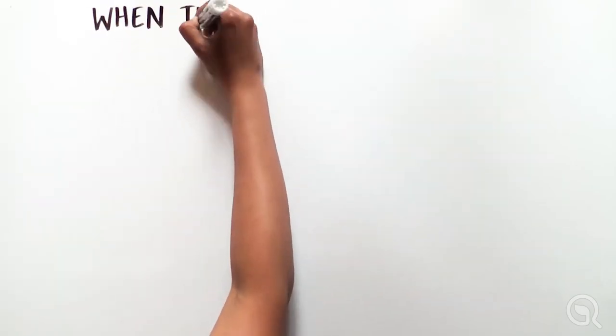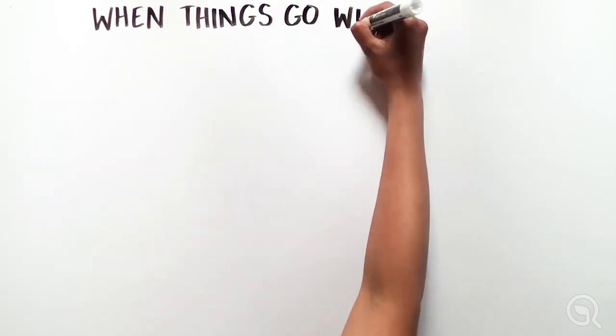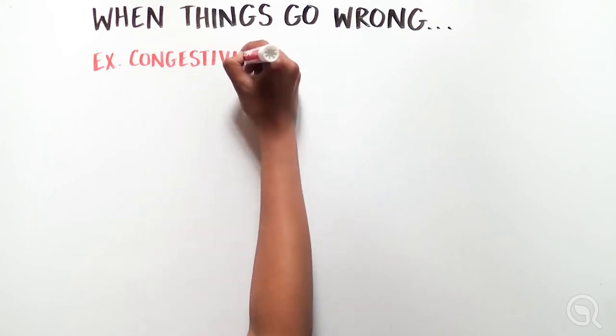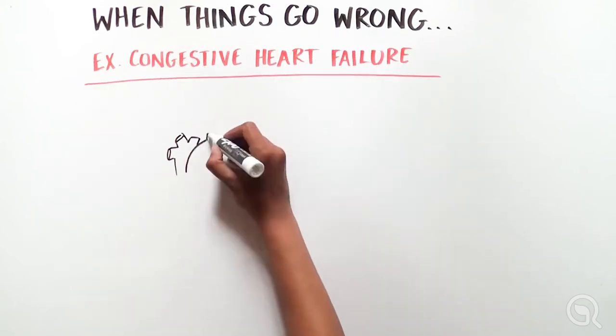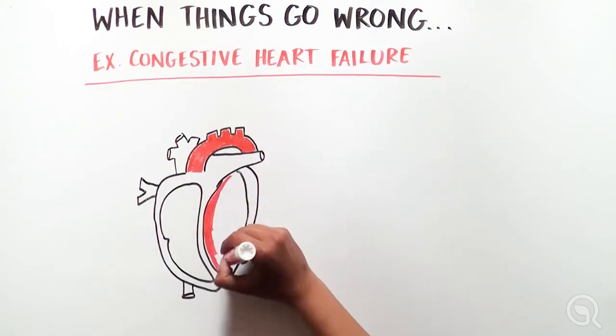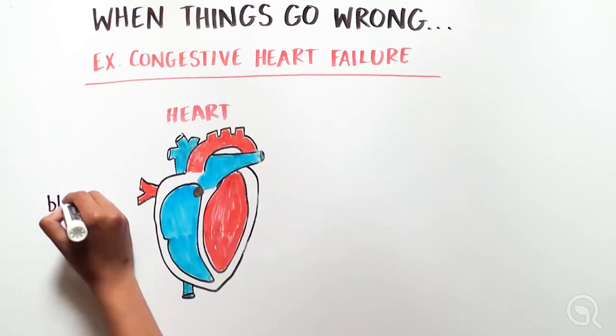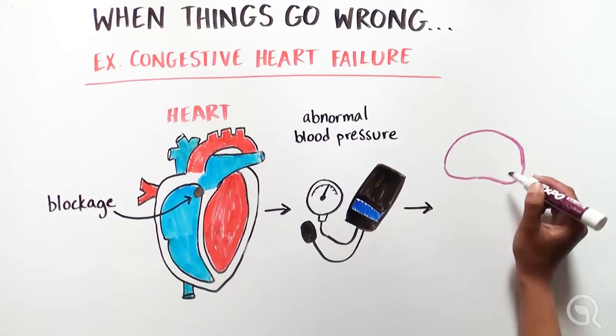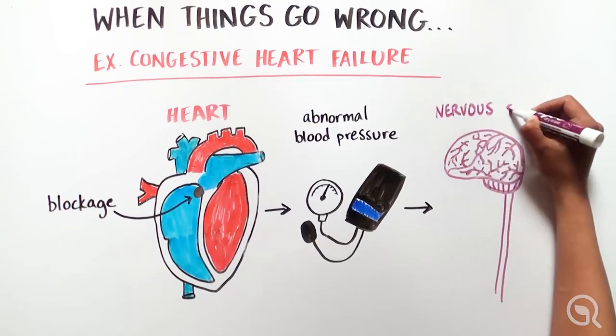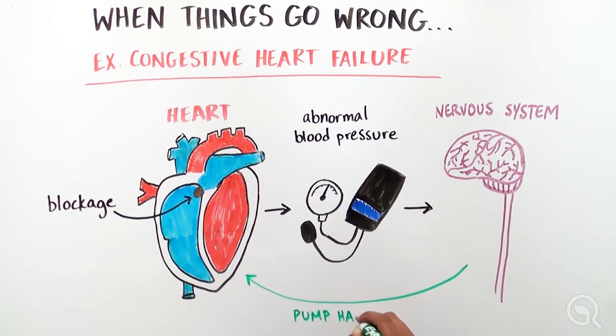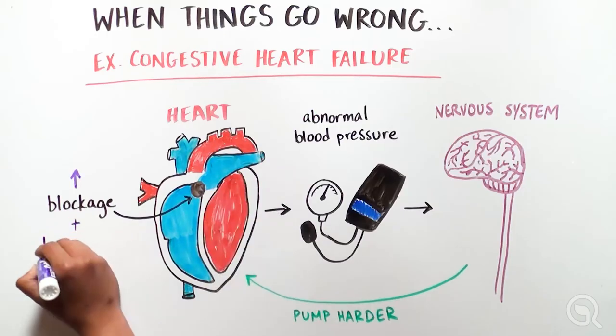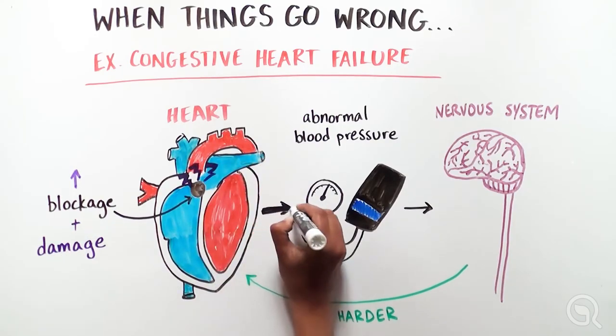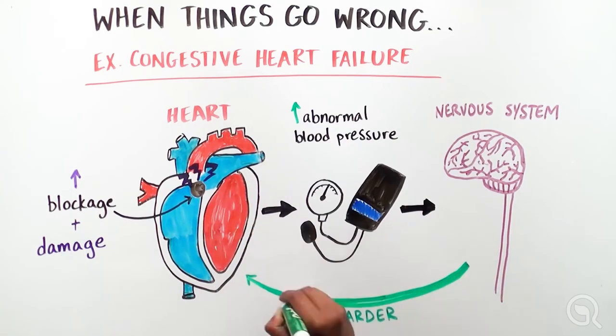But sometimes feedback loops don't work properly and cause health problems. Congestive heart failure, for example, occurs when a positive feedback loop goes awry. Here, heart blockages lead to abnormal blood pressure, which the nervous system detects and attempts to correct by sending signals to the heart to pump harder. This leads to more heart damage, which further disrupts blood pressure, and so on.